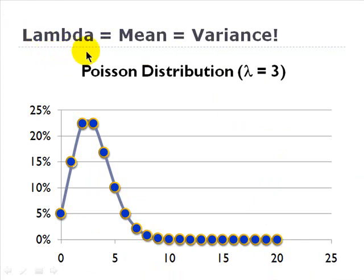And the neat thing about the Poisson is lambda equals both the mean and the variance. So here I've plotted a probability density function for the Poisson, also called a mass function.